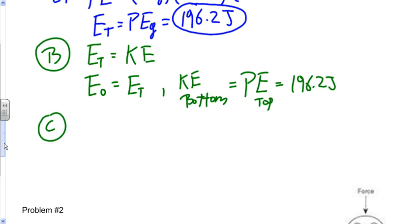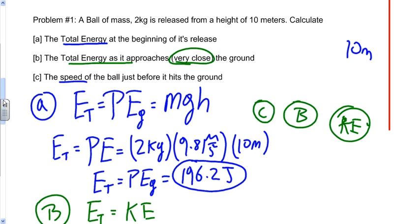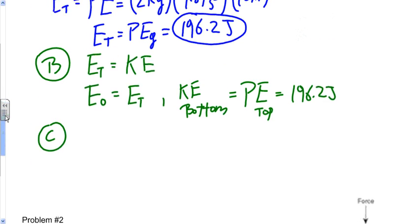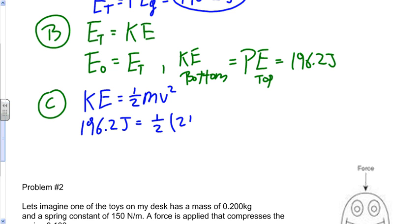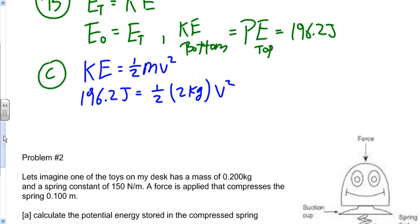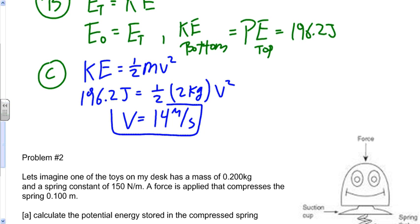For part C, they want the speed of the ball just before it hits the ground. We found KE = 196.2 joules. Plugging into the kinetic energy equation KE = ½mv²: 196.2 = ½ × 2 kilograms × V². The ½ and the 2 cancel out, so V² = 196.2, and taking the square root gives V = 14 meters per second.